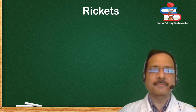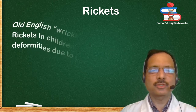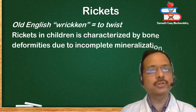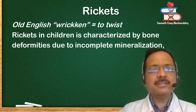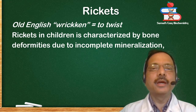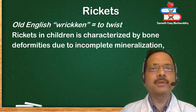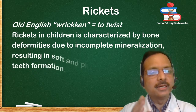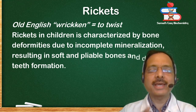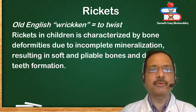Rickets — obtained from the Old English word 'ricken,' meaning to twist. Rickets in children is characterized by bone deformities due to incomplete mineralization, resulting in soft and pliable bones, and delay in teeth formation.